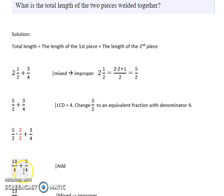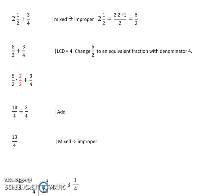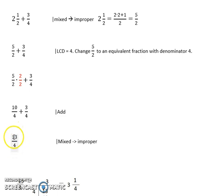Now we have two fractions with the same denominator, so we can add by just adding the numerators and keeping the common denominator. Adding the numerators: ten plus three gives us thirteen on top, and we keep the common denominator of four. So now we have the fraction thirteen over four.